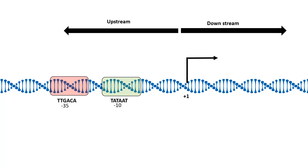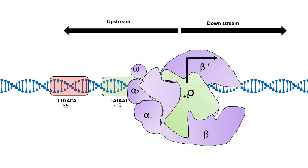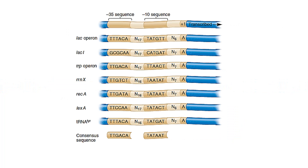Just before the transcription start site, the nomenclature uses minus to denote the upstream region and plus to denote the downstream region. At 10 base pairs upstream and 35 base pairs upstream, there are well-conserved consensus sequences to which the prokaryotic polymerase can bind. This binding and finding of the promoter is aided by the sigma factor, which really helps in binding the RNA polymerase to the desired promoter region. These sequences at minus 10 and minus 35 are known as consensus sequences.